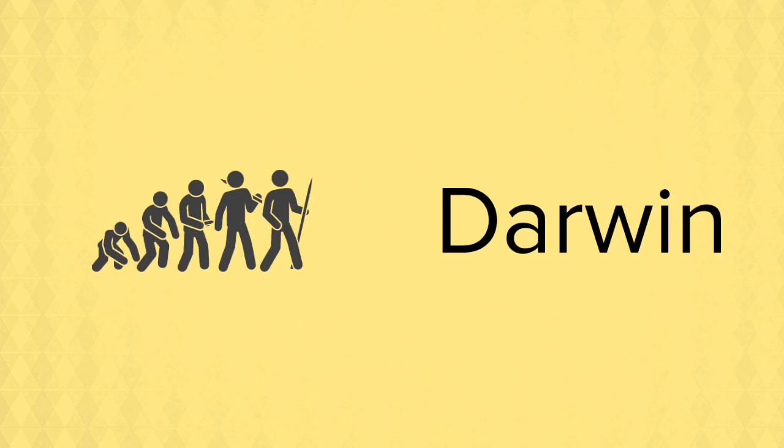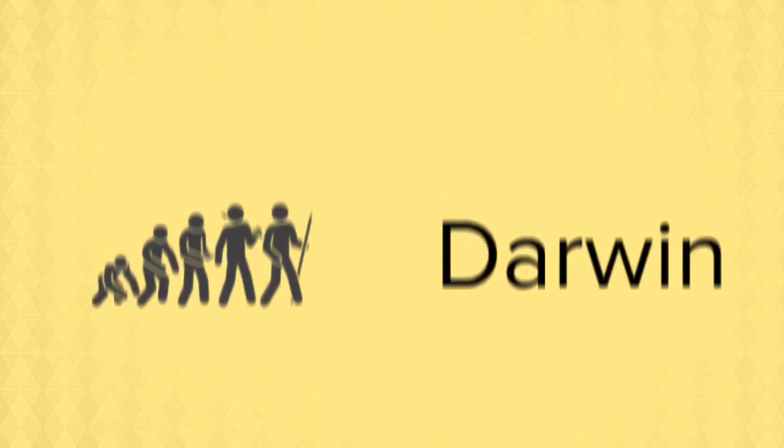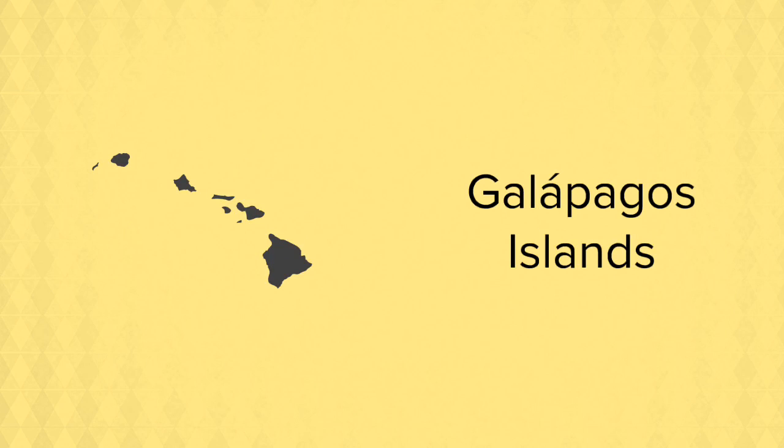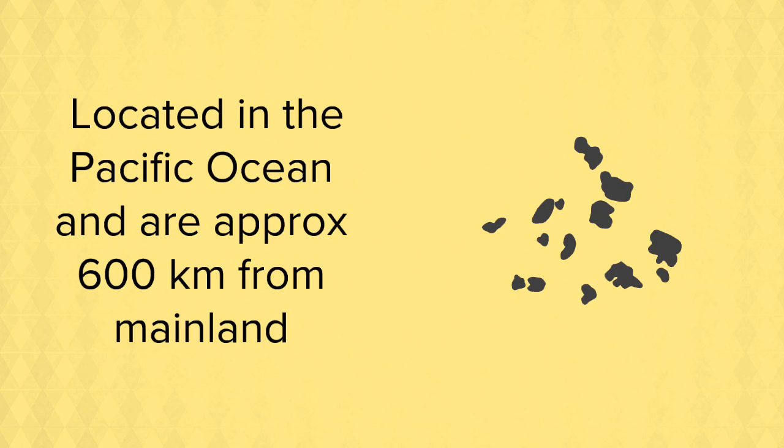Evolution is a really complex, enormous topic and the best way to understand it is to go back to Darwin's voyage to the Galapagos Islands. Darwin aboard the HMS Beagle arrived at the Galapagos Islands which are located off the coast of Ecuador. The Galapagos Islands are an archipelago, a group of islands located in the Pacific Ocean, about 600 kilometers from the mainland and they were formed by volcanic action.